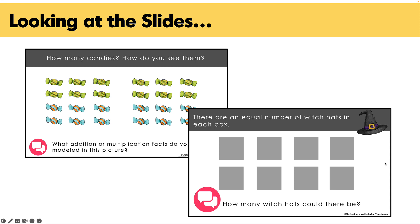This is a two-slide number talk. We start out with saying that there's an equal number of witch hats in each box — how many witch hats could there be? Again, there's a ton of room for correct answers. Maybe there's one witch hat under each box, so there are eight in total. Maybe there are 10 hats in each box, so that would make 80 in total. On the second slide, you'll show the actual number and then reflect on that.